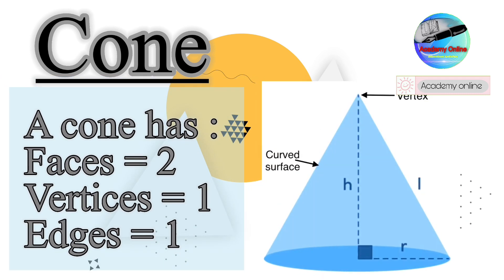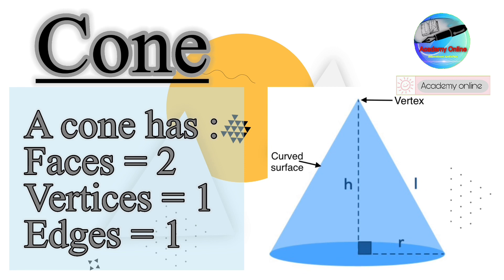A cone has two faces, one vertex, and one edge.